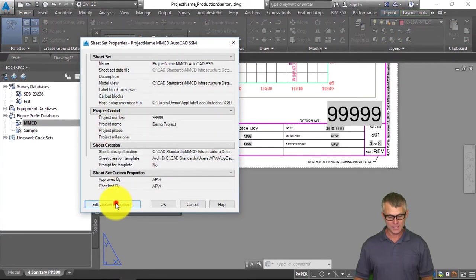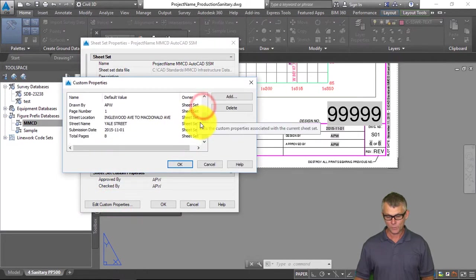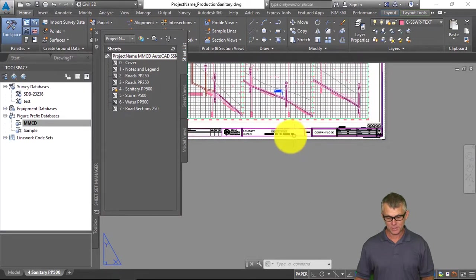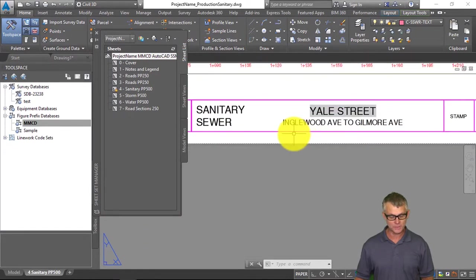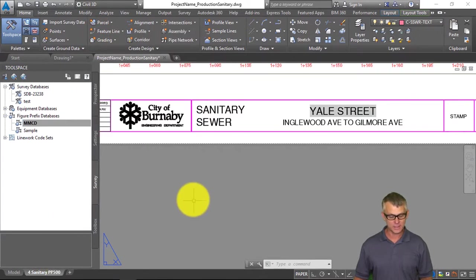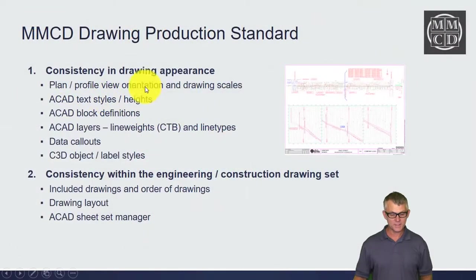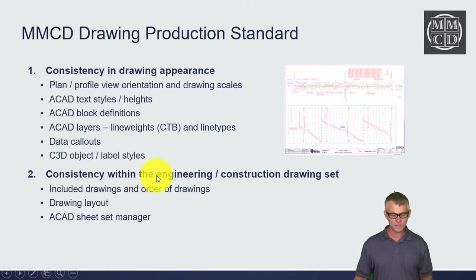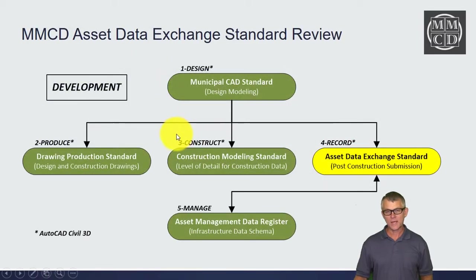All of the title block items visible in the drawing have been filled out by modifying the properties of the sheet set. If I go to Sheet Set Properties, the project number, project name, and custom properties are being called as part of the sheet set manager to populate that information. At any time you can right-click and import another layout as a sheet. To summarize the Drawing Production standard: it covers plan and profile view orientation and drawing scales, text styles and heights, block definitions, layers, data call-outs, Civil 3D object and label styles, and overall consistency within the drawing set.